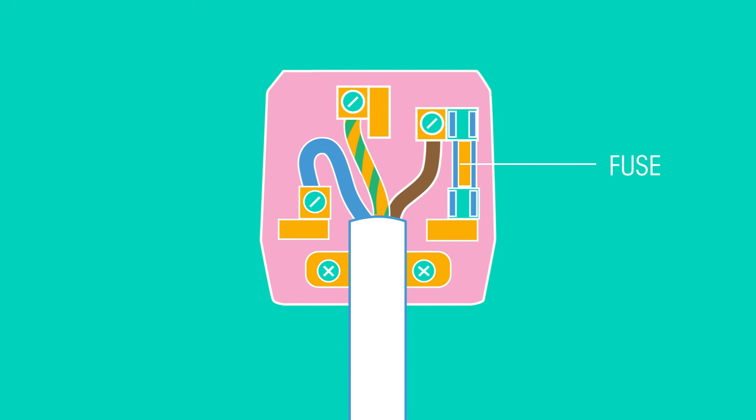The fuse is a very thin wire between the live terminal and the live pin. It has a very low melting point, so if too large a current flows through the fuse, then the wire heats up and melts, thus breaking the circuit. Which is why you might hear the phrase, the fuse has blown.